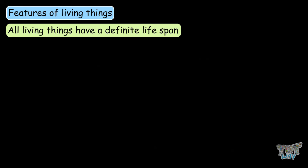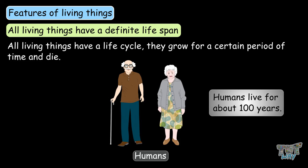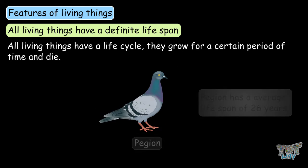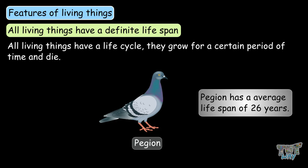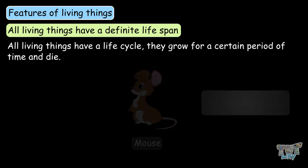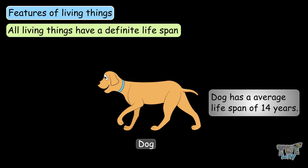The next characteristic of living things is that they have a definite lifespan. All living things grow for a certain period of time and then die. For example, humans live for about 100 years, cows live for about 20 years, pigeons have an average lifespan of 26 years, mice have an average lifespan of 4 years, foxes have an average lifespan of 15 years, and dogs have an average lifespan of 14 years.